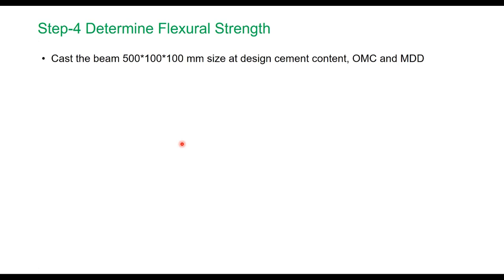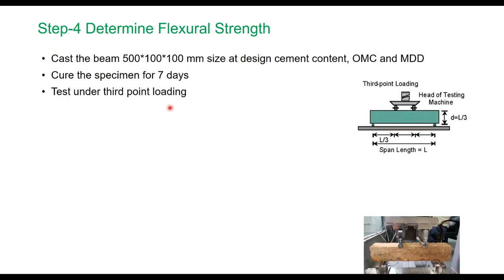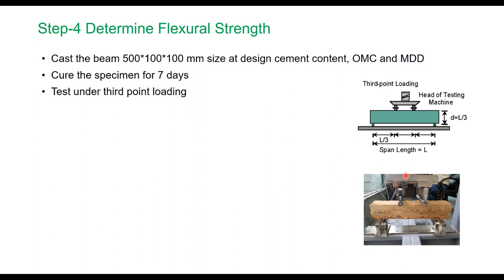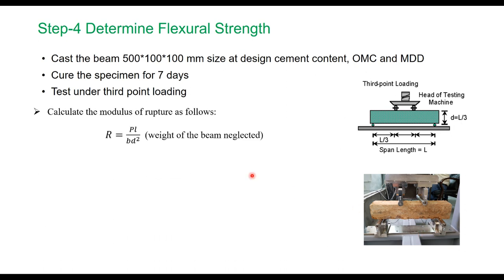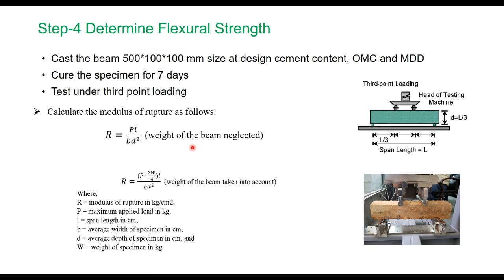The next step is to determine the flexural strength. Cast a beam of specified size at the design cement content, OMC, and maximum density; cure for seven days, then test under third-point loading. Note the load at failure and calculate the modulus of rupture. Two equations are given in the code: if excluding beam weight, use MR = PL / (BD²); if including beam weight, the load P includes three-fourths of the specimen weight, where B is average width, D is average depth, W is specimen weight, and P is the maximum applied load in kg at failure.